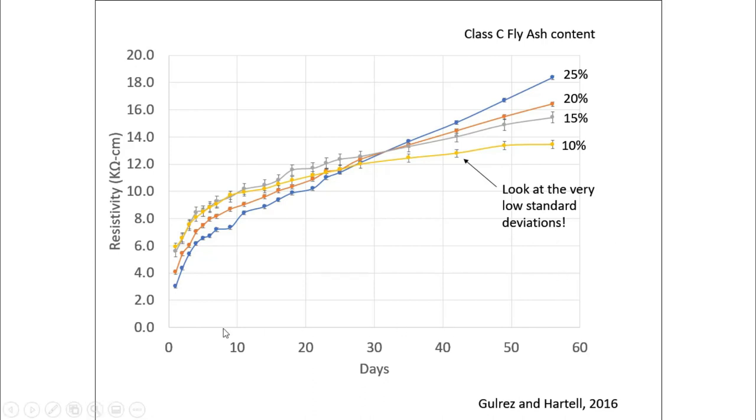So, for example, we can have days down here on the x-axis and on the y-axis we have resistivity. And we can take these cylinders. Here's with 10% fly ash, 15% fly ash replacement, 20% fly ash replacement, and 25% fly ash replacement there at the top.